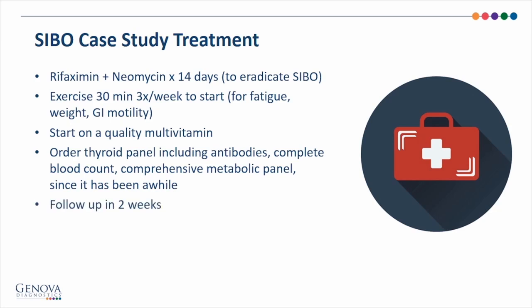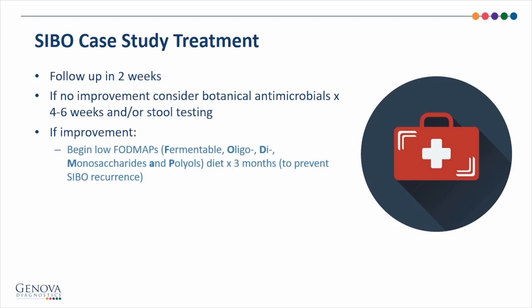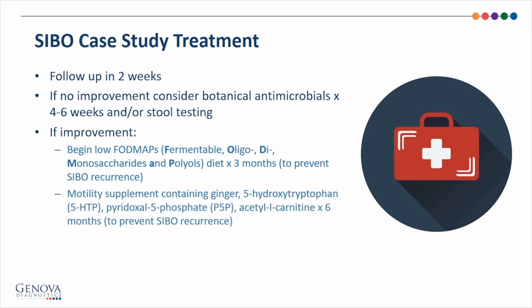Then the patient should follow up in two weeks. In two weeks, if there's no improvement, I might consider botanical antimicrobials for four to six weeks or run a stool test to see if there's anything else going on. If there is improvement, at this point, I would transition them to treatments aimed at preventing SIBO recurrence. This would include a low FODMAPS diet, which stands for fermentable oligodisaccharides, monosaccharides, and polyols, which are short-chain carbohydrates that bacteria can ferment to produce gases and symptoms. After three months, the patient can slowly start incorporating the FODMAPS foods back into her diet, but if there is an exacerbation, she should continue the low FODMAPS diet and test each month if those foods can be tolerated. It is also a good idea to improve their motility so the small intestine can continuously sweep out the excess bacteria and debris.